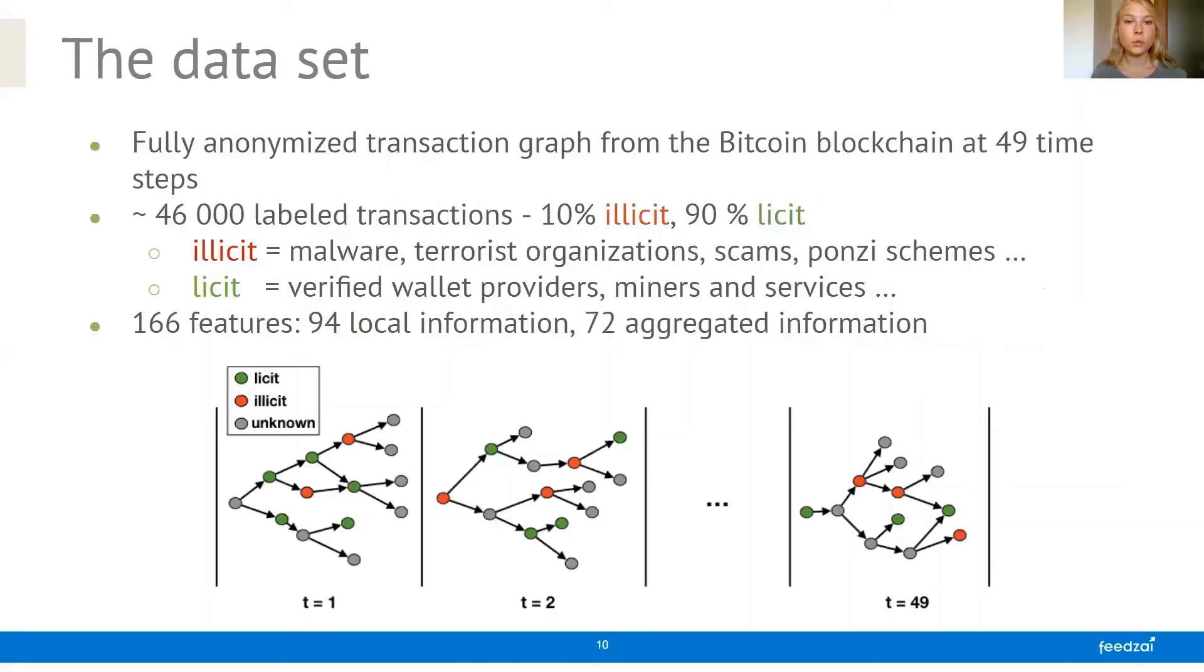The data set that we are using is one that was released by a company called Elliptic last year in this exact workshop and it represents a fully anonymized transaction graph from the Bitcoin blockchain at each of 49 different time steps. We have about 46,000 labeled transactions, 10% illicit and 90% licit, where the labeling indicates whether the initiating entity of a transaction belongs to an illicit or licit category. Illicit in this case something like malware, terrorist organizations and so on, where licit represents verified wallet providers, miners and services.